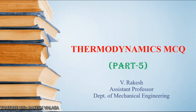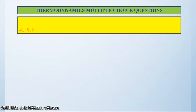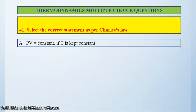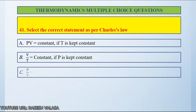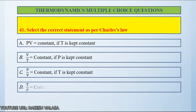Multiple choice questions on thermodynamics, part 5. Question number 41: Select the correct statement as per Charles's law. Option A: PV equal constant if T is kept constant. Option B: V by T equal constant if P is kept constant. Option C: P by V equal constant if T is kept constant. Option D: T by P equal constant if T is kept constant.